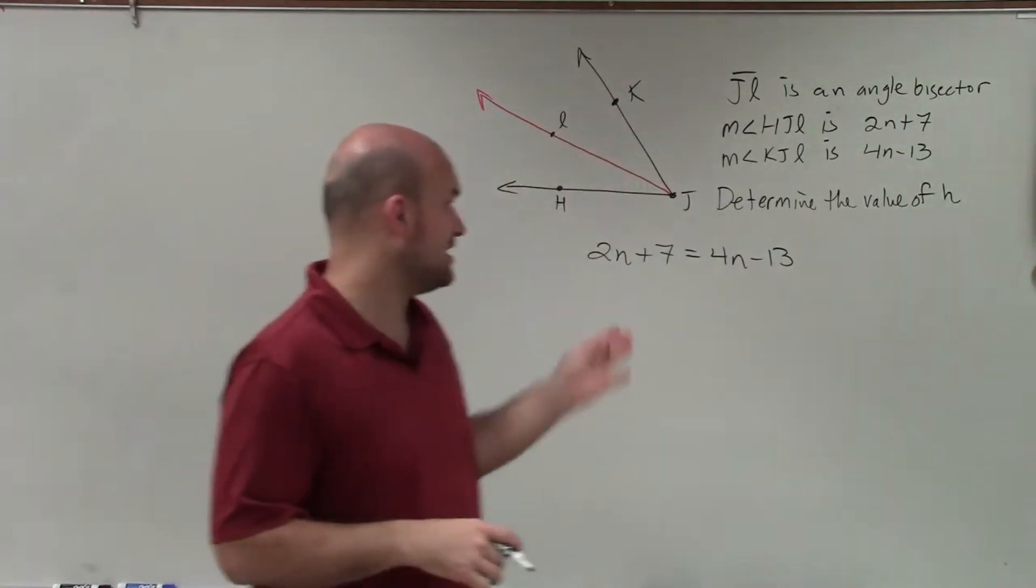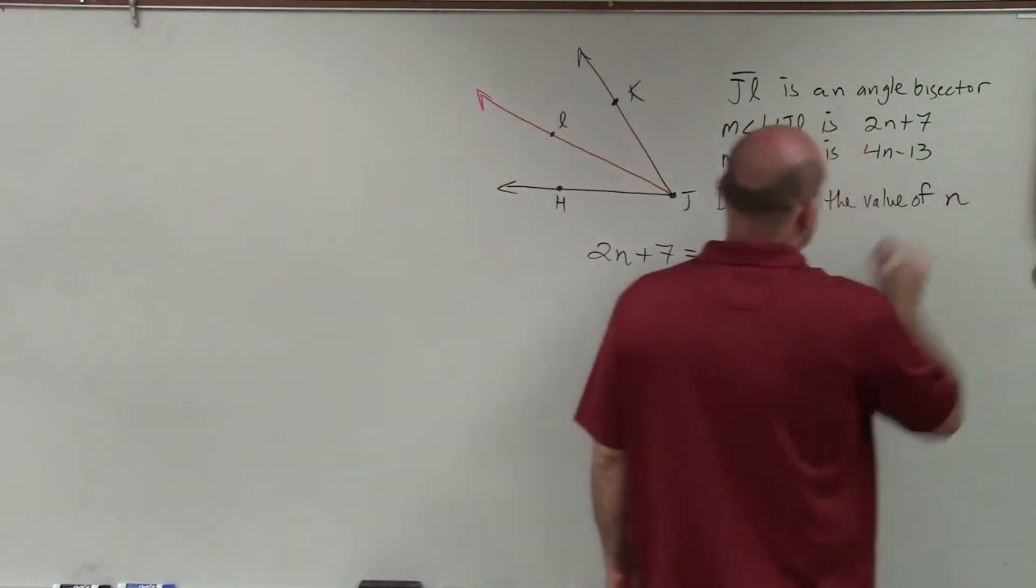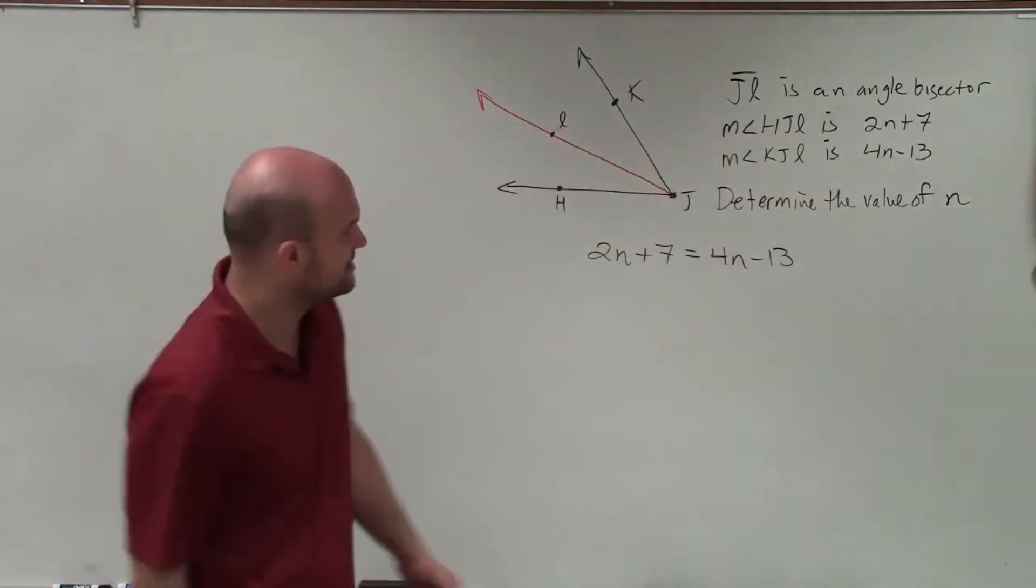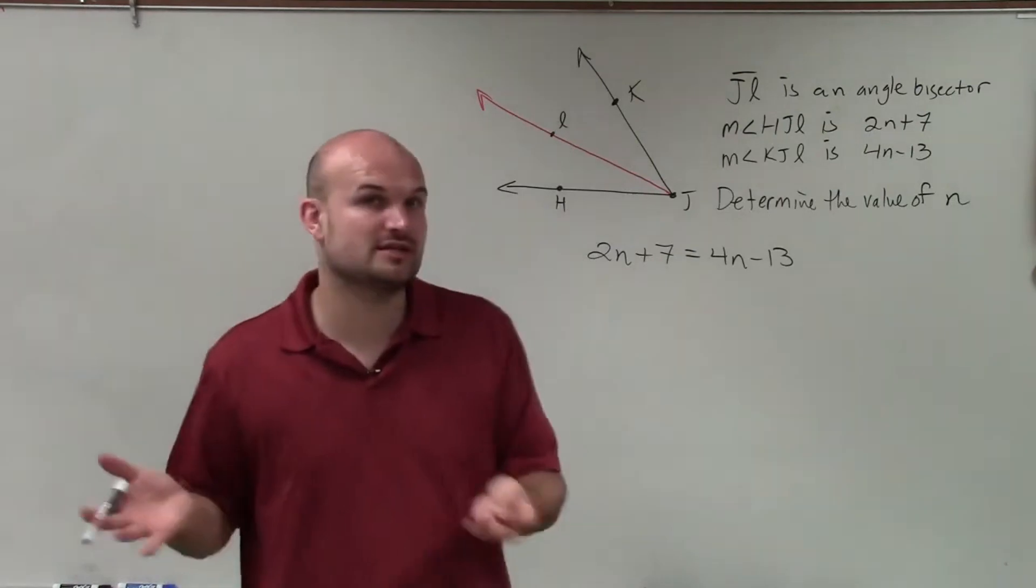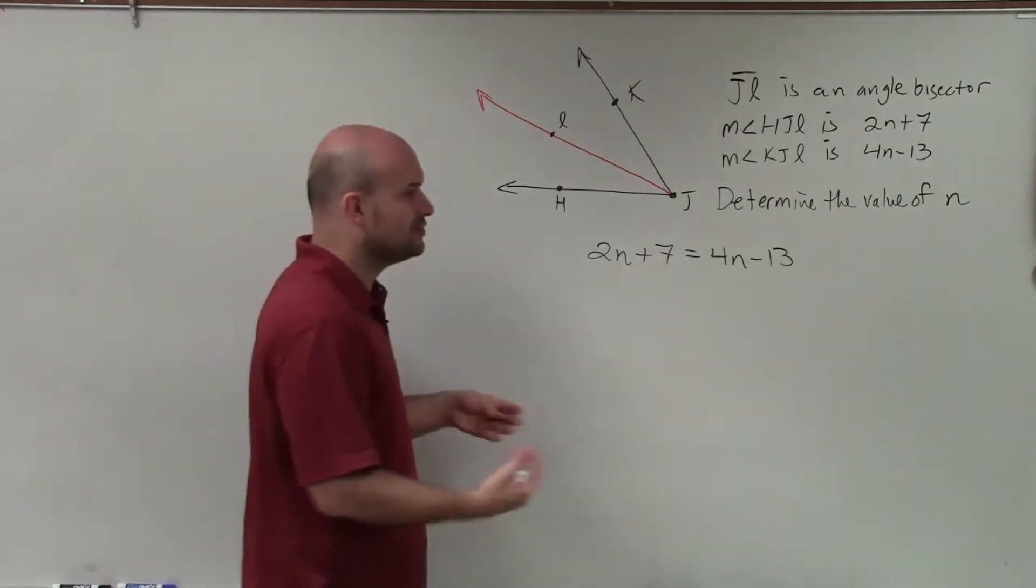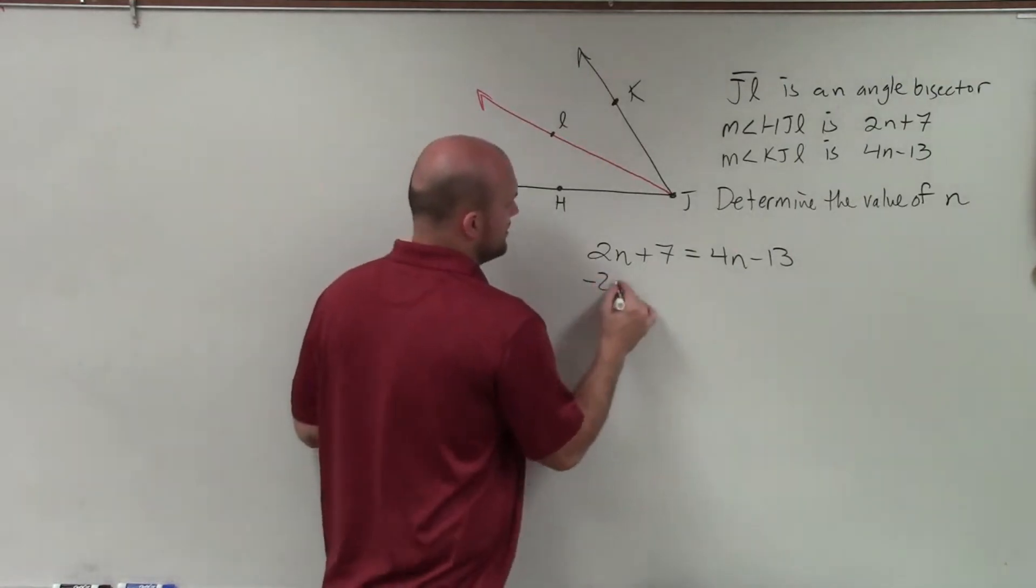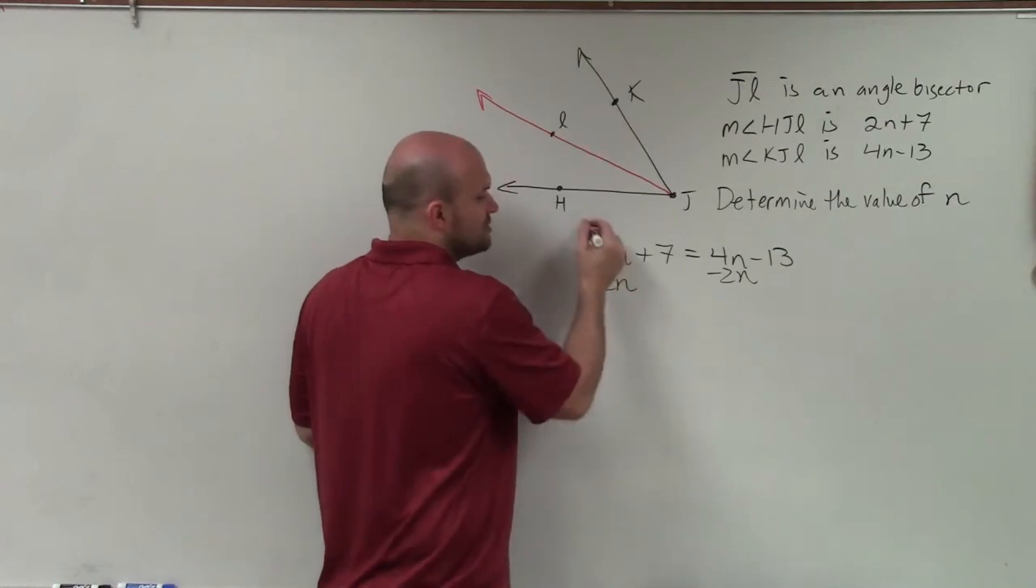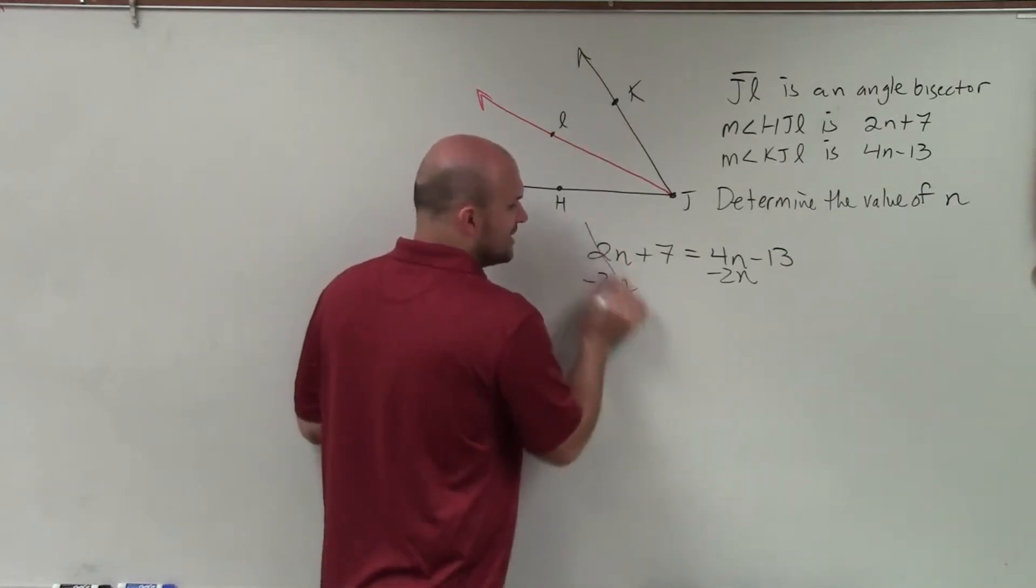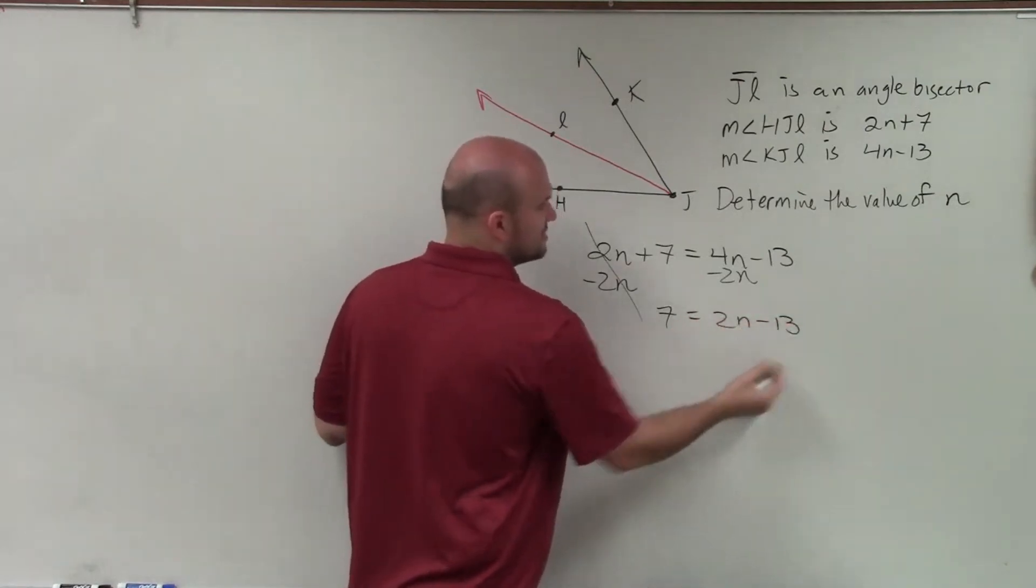Now let's go and determine what exactly they're asking. They're saying find the value of n, not h. I don't know where my n's and h's got a little mixed up. So now all I simply need to do is solve this equation. And to do that, I've got to make sure I get the variable on the same side. And you can choose the left side or the right side. I always like to choose a side where my variable will be positive. So I'll use the subtraction property of equality, subtract 2n on both sides. That goes to 0, and then I'm left with 7 equals 2n minus 13.